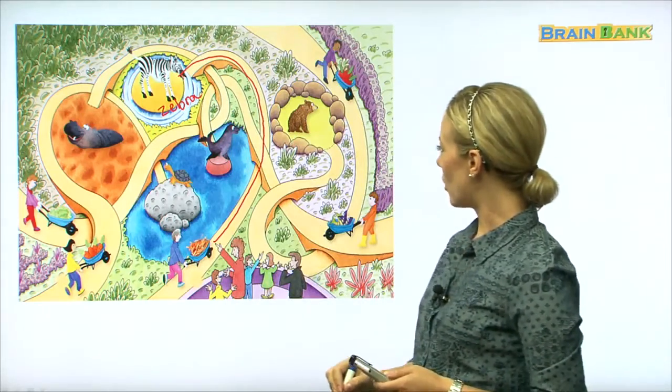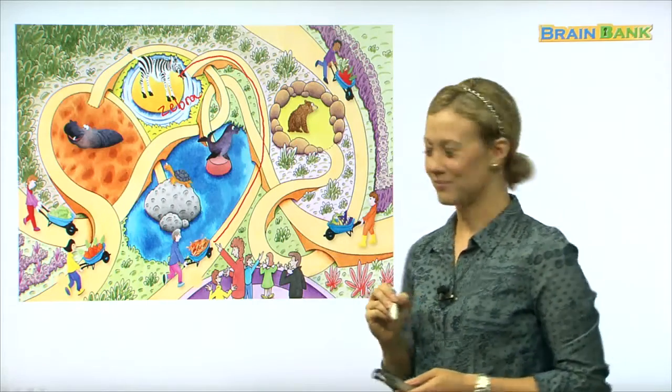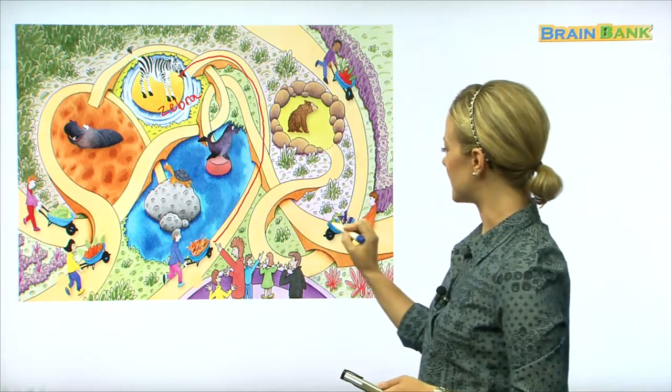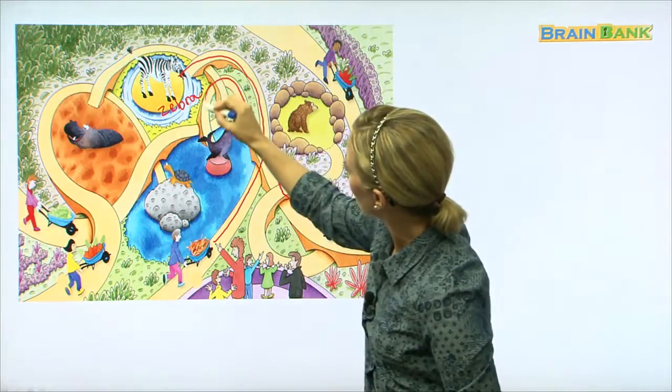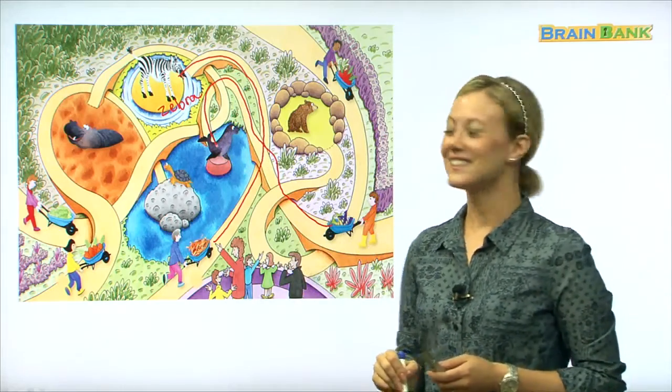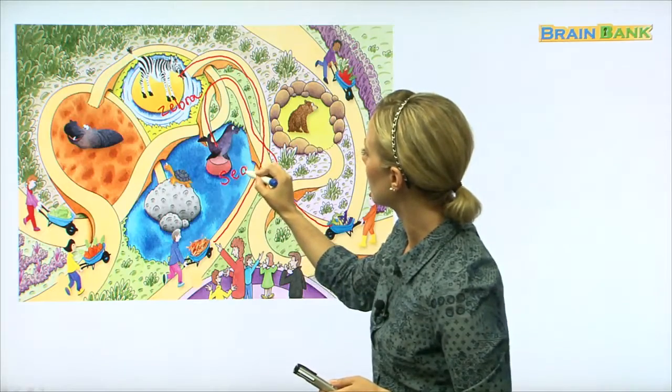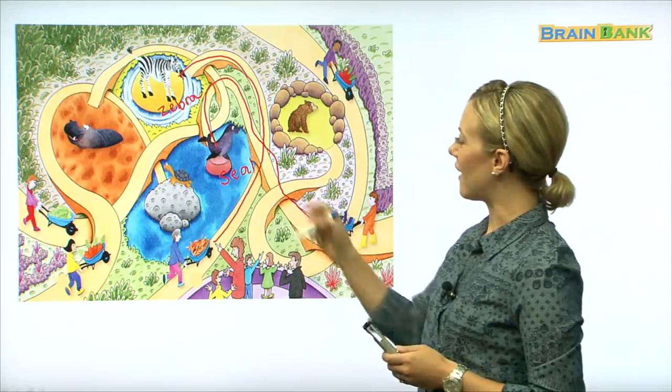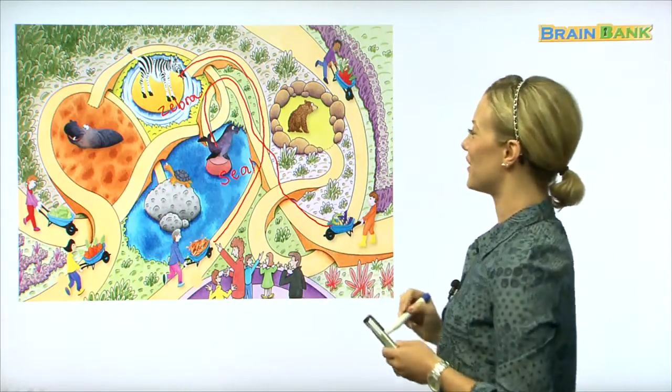Now, let's go over to this zookeeper. He has fish. Now, who do you think likes to eat fish? Let's see. Let's follow the path. What animal is that? That's right. We call that animal a seal. S-E-A-L. Seal. And seals like to eat fish. Very good.